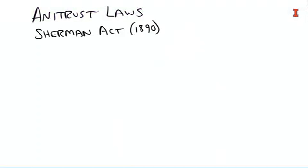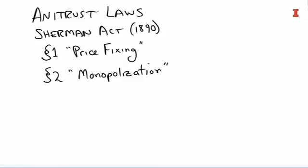The most important antitrust act was the first one: the Sherman Act of 1890. The Sherman Act has several sections. Section one deals with price fixing — we'll talk about that later when we talk about firms that collude. Sherman Act section one makes it illegal to collude, which we call price fixing in the United States, and you go to jail for that. Sherman Act section two makes monopolization illegal.